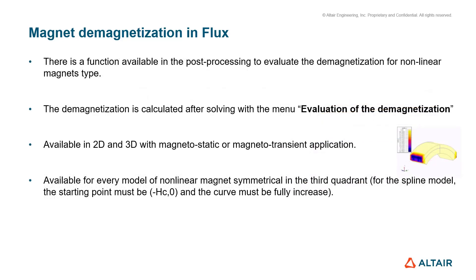In Flux, we have developed a function that considers the demagnetization of permanent magnets. This function is available once the project is solved — that is, in the post-processing environment. The demagnetization effect is calculated after solving, using the menu 'Evaluate Demagnetization'. This function is available in 2D and 3D with magneto-static or magneto-transient applications. If the user wants to use this function, they should create a non-linear magnet; if a linear magnet is used, this function cannot be used.